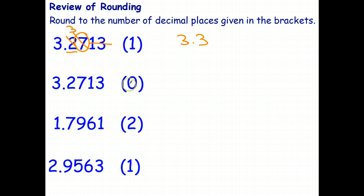If I'm rounding to zero decimal places then that means I just want the nearest whole number. So what I'm going to do is underline the whole number, I circle the number behind it, cross out the others.